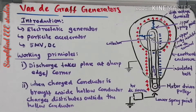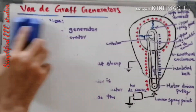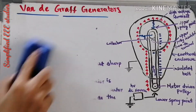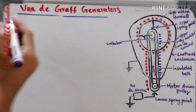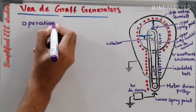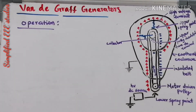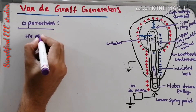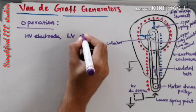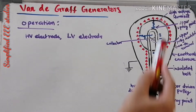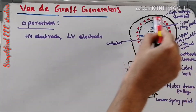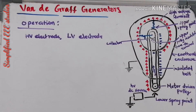Now let us see how it operates. Please copy the diagram first. Let us see the operation. First I want to introduce two electrodes. There are two electrodes: the first one is the HV (high voltage) electrode, and the second one is the LV (low voltage) electrode. As you can see, this is the high voltage electrode, and this one is the low voltage electrode.